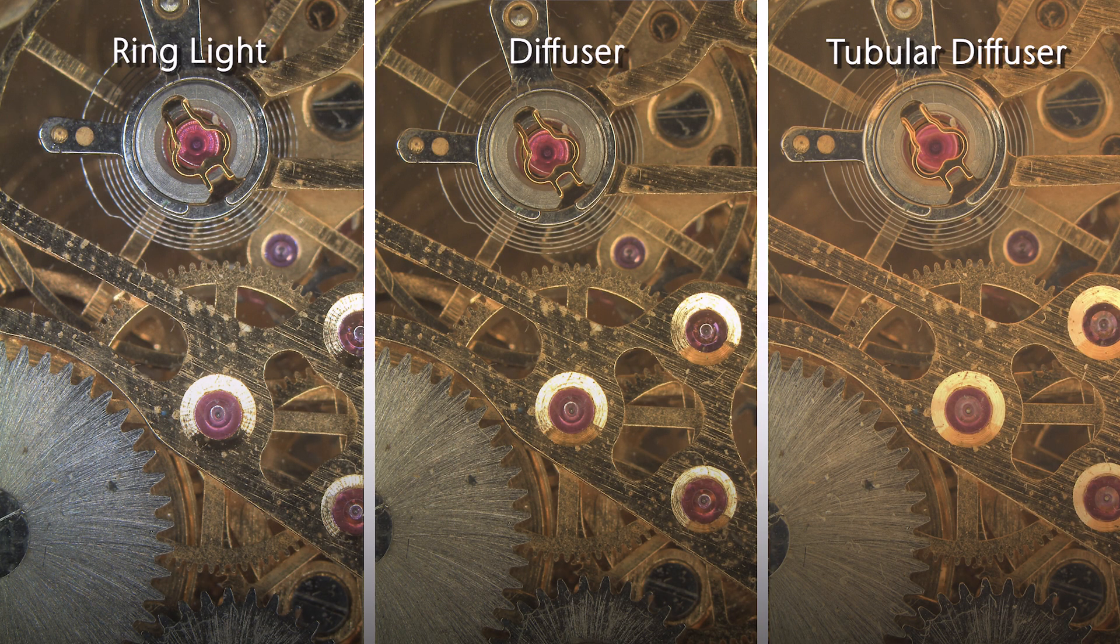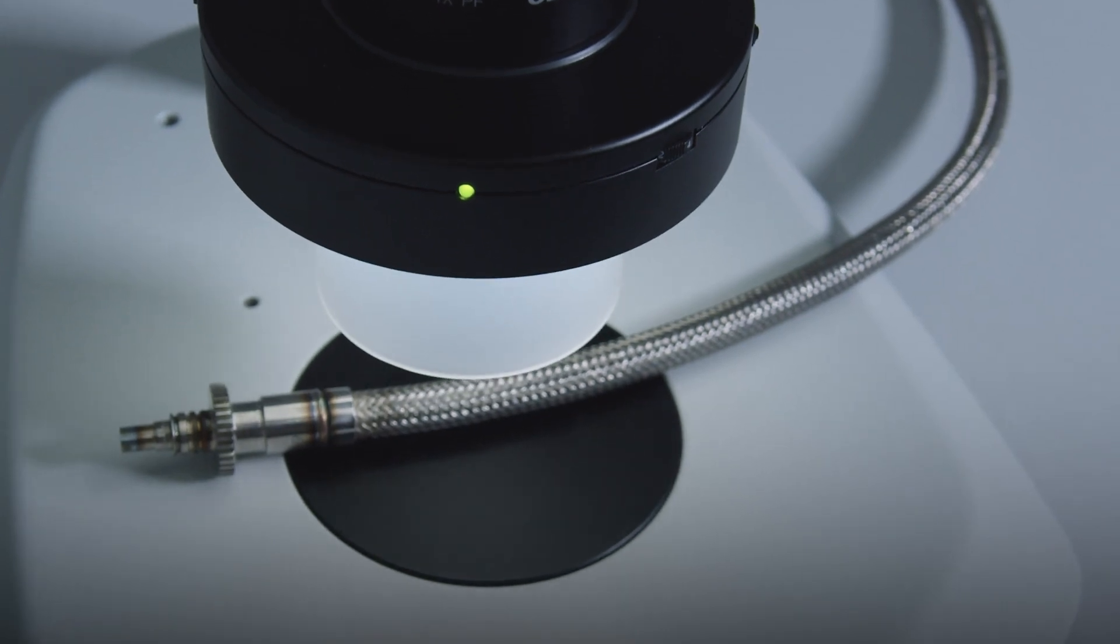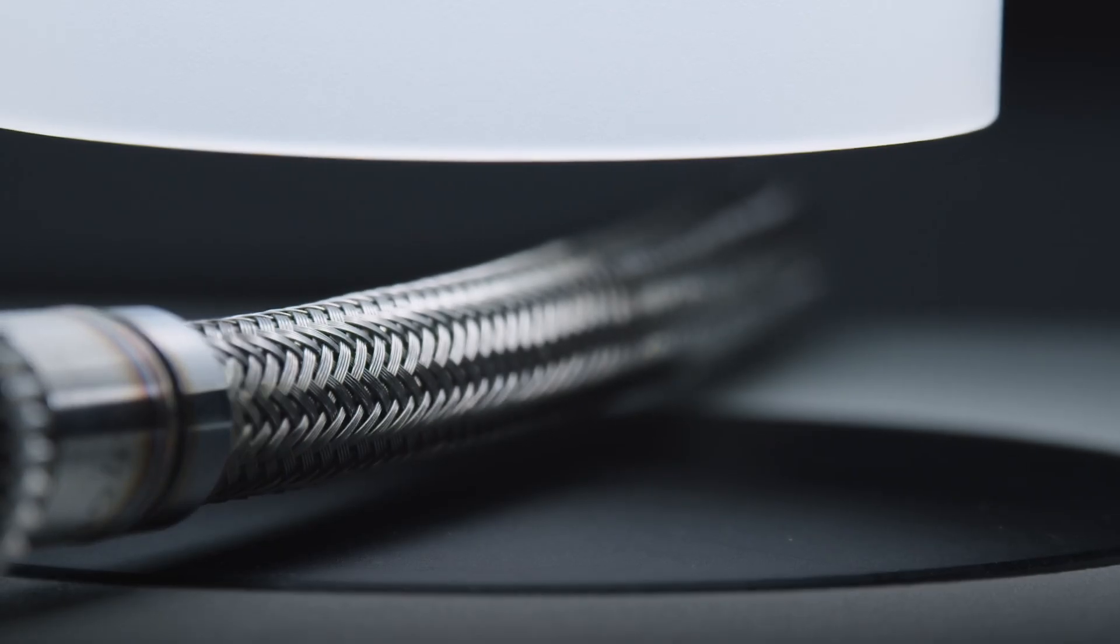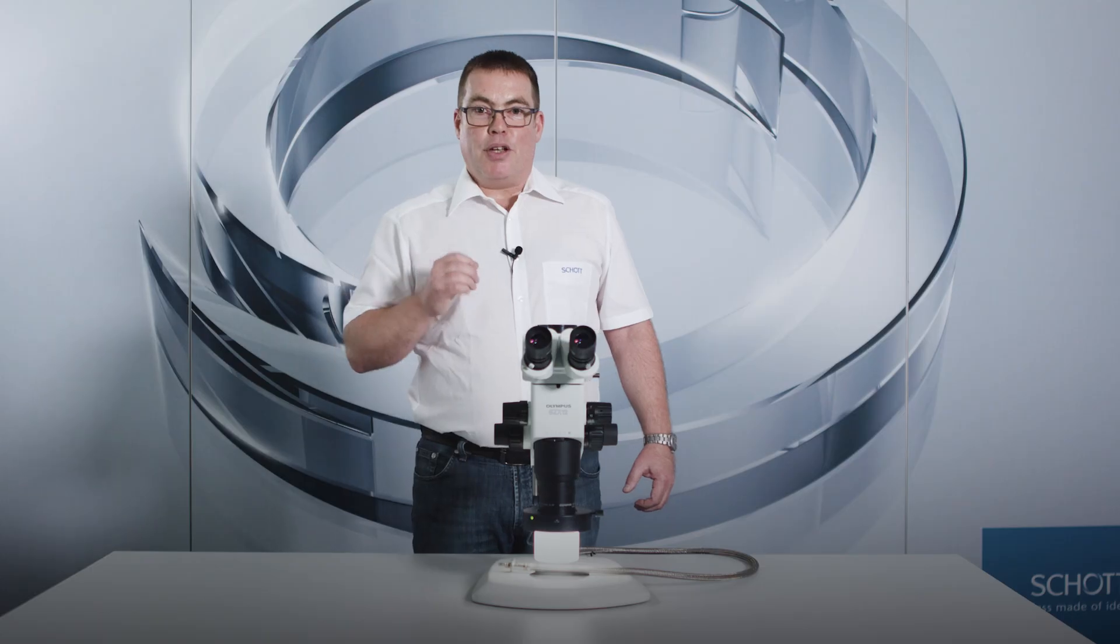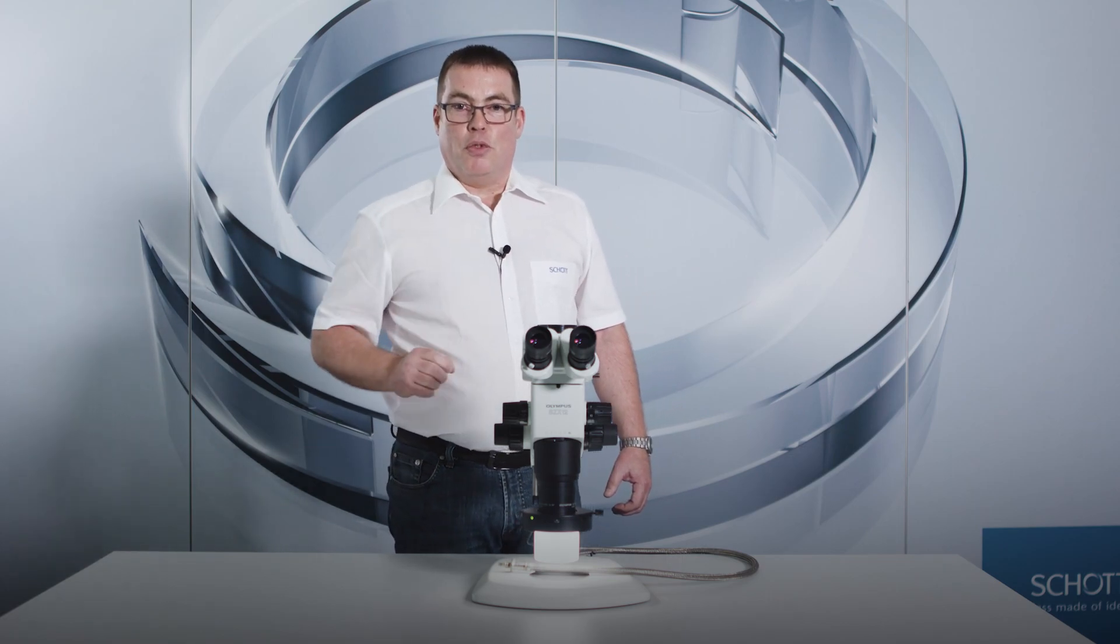Another example is shown here using a clock. The diffuser combines the advantages of the two methods. You still have access to the sample and, at the same time, a much more diffused light compared to other conventional diffusers and at a low price.